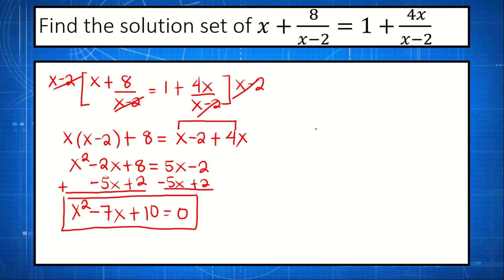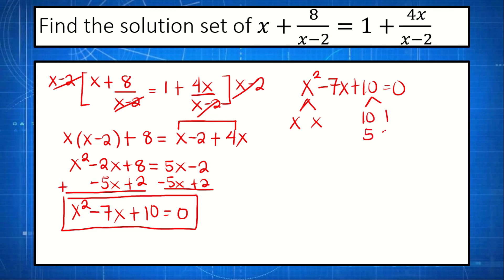We get the roots of this quadratic equation using factoring. We factor x squared: that's x times x. We factor 10: we have 10 times 1 and 5 times 2. Adding the pairs: 10 plus 1 is 11, and 5 plus 2 is 7. We need negative 7, so both factors are negative: negative 5 plus negative 2 equals negative 7.